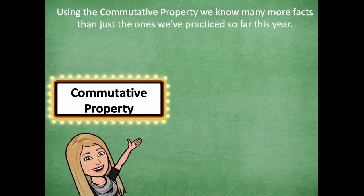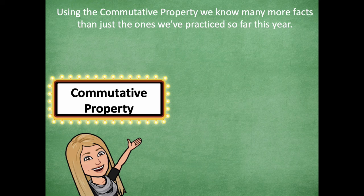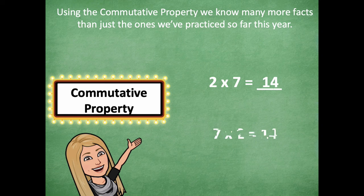Using the commutative property, we know many more facts than just the ones we've practiced so far. You can flip the order and think about facts you've never even learned. For example, we know three times nine is 27, but we haven't learned nine times three. Because of the commutative property, flip-flop those factors and you know nine times three is 27! Similarly, if we know two times seven is 14, then flip-flop those factors and seven times two equals 14.